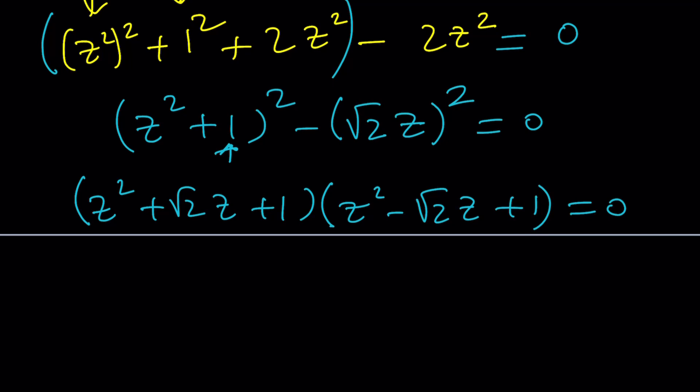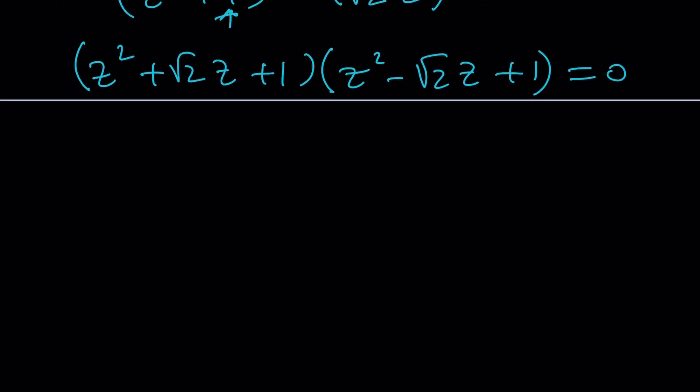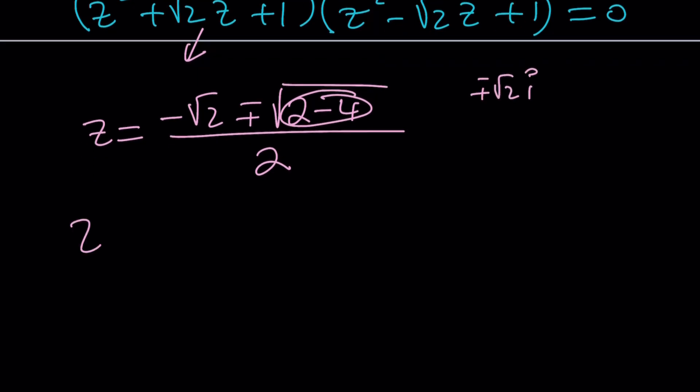These are quadratics and we can solve quadratics very easily by using the quadratic formula. There's no quintic, hexic, septic, haptic, or octic formula, but we do have a formula for this. We can write one of the solutions as negative b plus minus the square root of b squared, which is 2 in this case, minus 4ac. That's going to be 2 minus 4. We're getting complex solutions, which is expected. This gives us square root of negative 2, which is plus minus root 2i. So z is negative root 2 plus minus root 2i divided by 2.